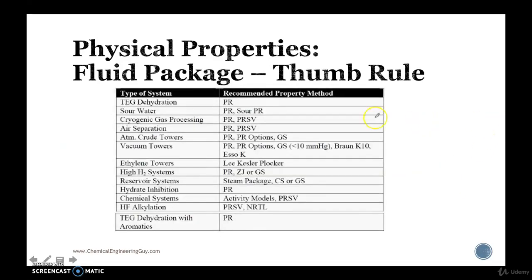Otherwise, we can choose directly via type of process. So if you know you're working with chemical systems, choose this one. If you know you're going to use triethylglycol dehydration with aromatics, use Peng-Robinson. PR stands for Peng-Robinson.